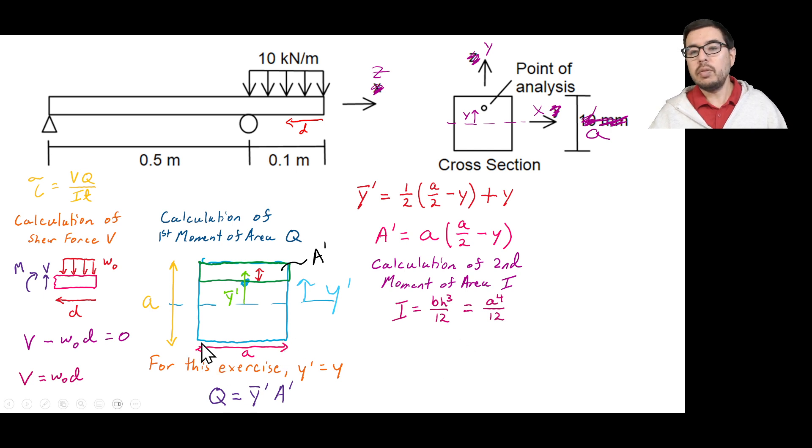The width of this whole cross-section, this square cross-section, is going to be equal to a. And so we can go ahead and start to plug in our t, our i, our q, and our v into the shear formula to figure out that the transverse shear stress is going to be w naught d times y bar prime times a prime all over quantity a to the 4th over 12 times a.